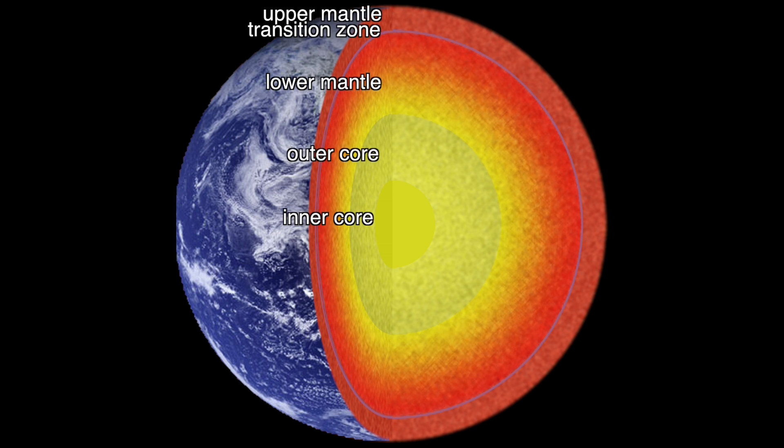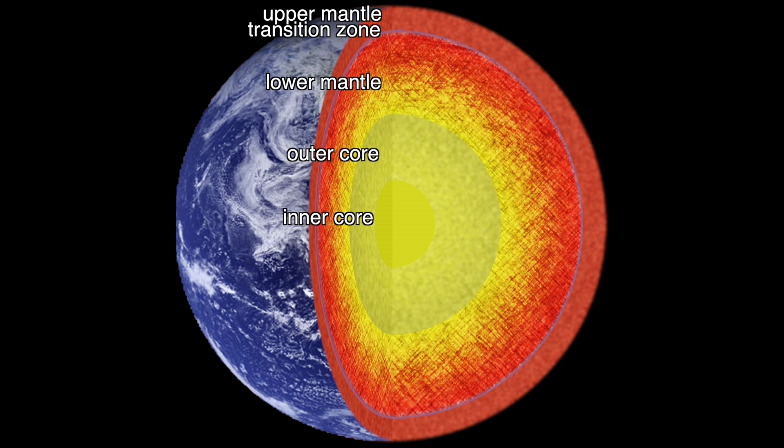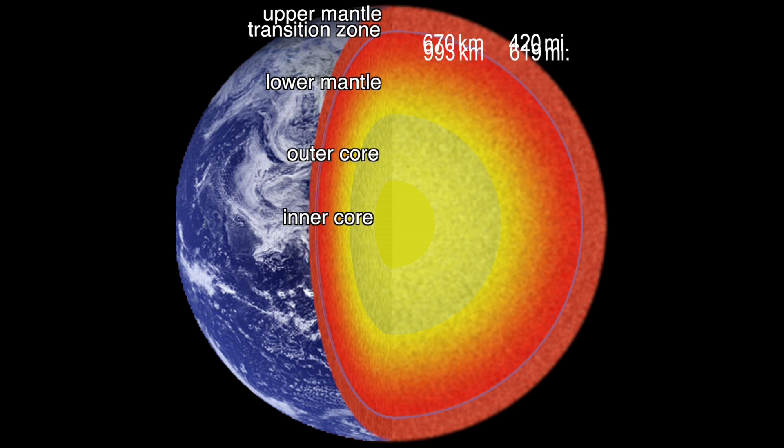The lower mantle comprises 55% of the planet by volume and extends from 670 to 2,900 kilometers, or 420 to 1,800 miles in depth, as defined by the transition zone and the core mantle boundary.